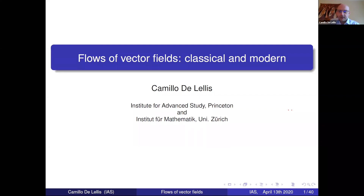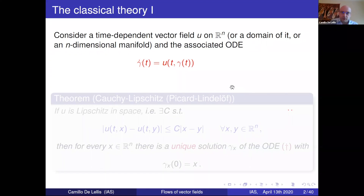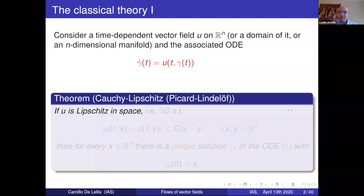Flows of vector fields: classical and modern. Let me start with the classical theory. We will consider a time-dependent vector field u on the Euclidean space, or a domain of it, or some n-dimensional manifold. The associated ordinary differential equation: the time derivative of a curve following a trajectory along this vector field is given by the vector field computed at time t and at the point where the curve is at time t.